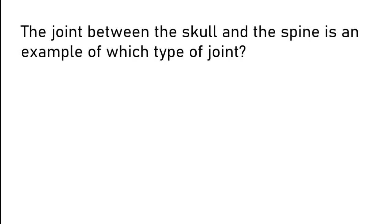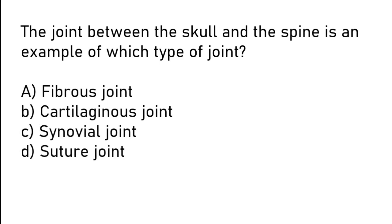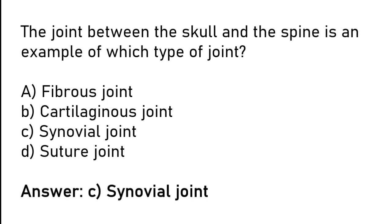The joint between the skull and the spine is an example of which type of joint? Fibrous joint, cartilaginous joint, synovial joint, or suture joint. The correct answer is option C: the joint between the skull and the spine is an example of a synovial joint.